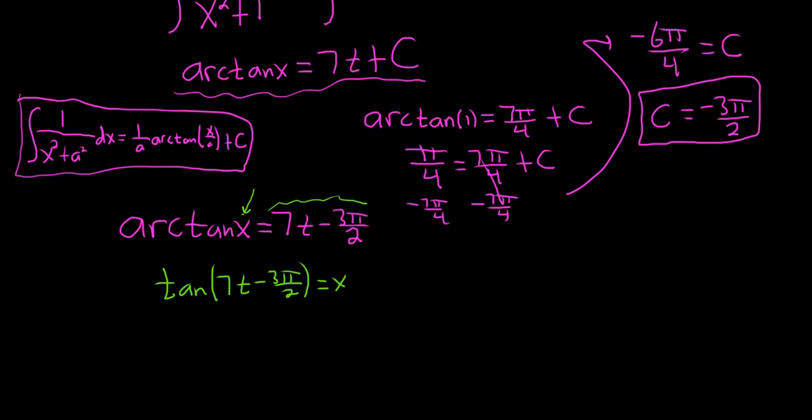Again, the arctangent takes x and sends it to this. So the tangent function should take this and send it back to x. That's how inverse functions work. It's an intuitive operation. They undo each other. And that's the answer.